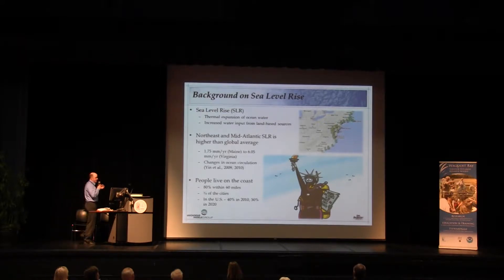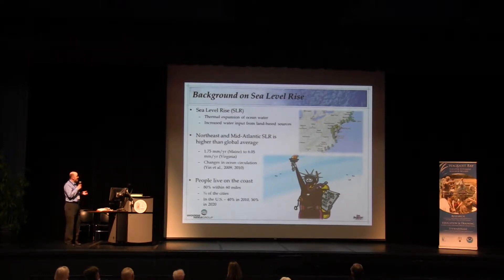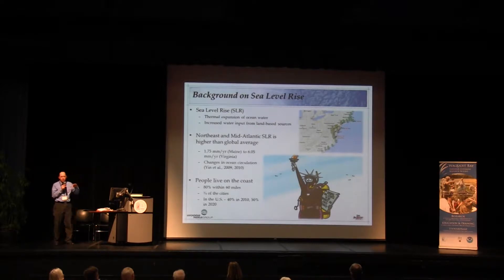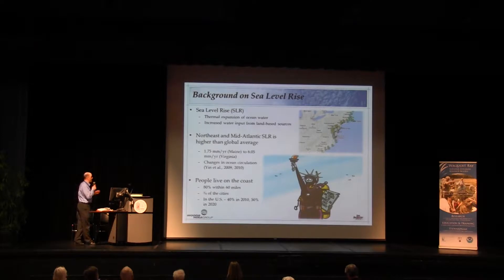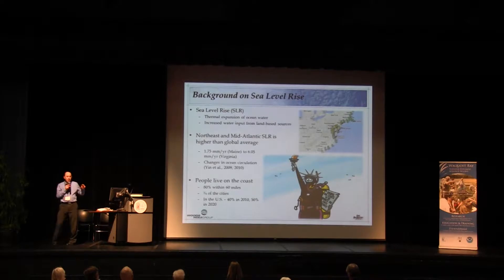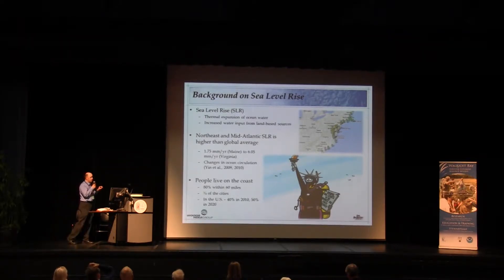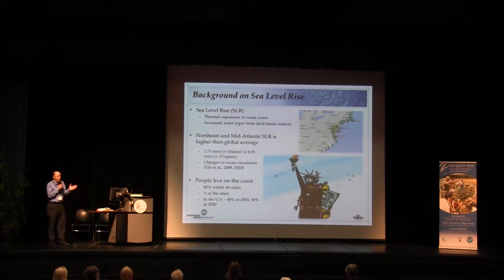In the Northeast and Mid-Atlantic, we actually have a little more trouble because the rate here is actually higher than the global average. The global average is around 1.47 millimeters per year. In the Northeast, we have it anywhere from 1.75 to about 6 millimeters per year. That includes changes in the land, but it also includes changes in ocean circulation. The Atlantic meridional ocean current is believed to be changing because of temperature changes in the water, which pushes water into different areas. With that change in circulation, we expect the Northeast is going to have a higher than average global sea level rise.